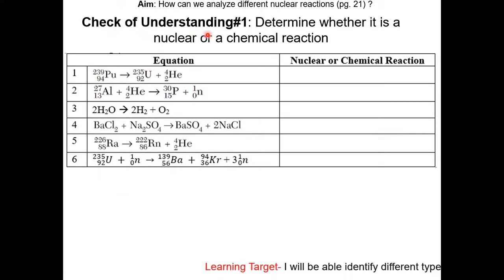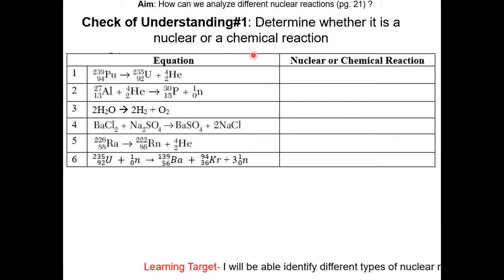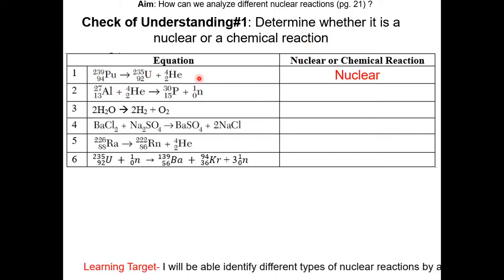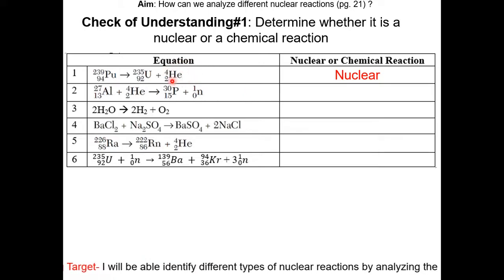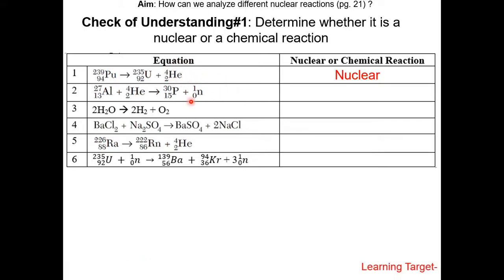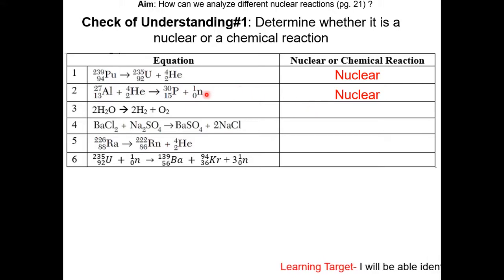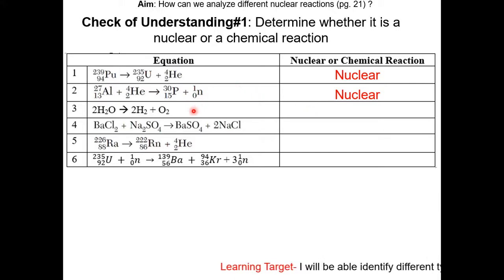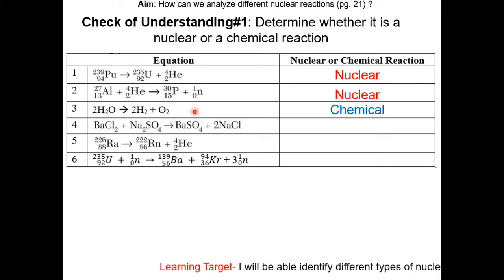Check of understanding number 1: determine whether each is a nuclear or chemical reaction. The first one is a nuclear reaction, because you see the mass numbers and atomic number. For question 2, it is also nuclear for the same reason. For question 3, we see the same elements on both sides of the equation, therefore it is chemical.